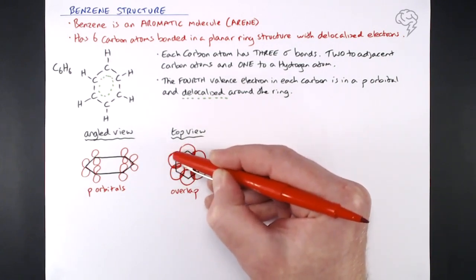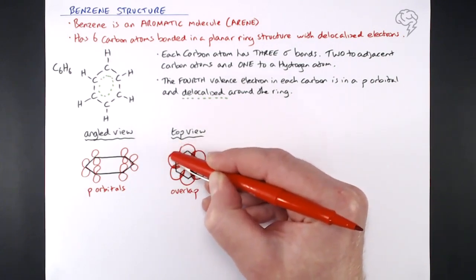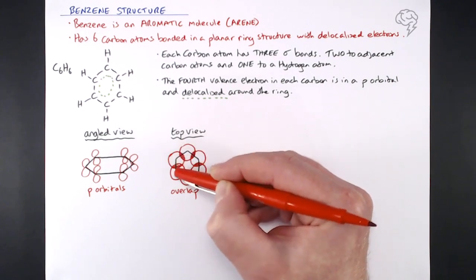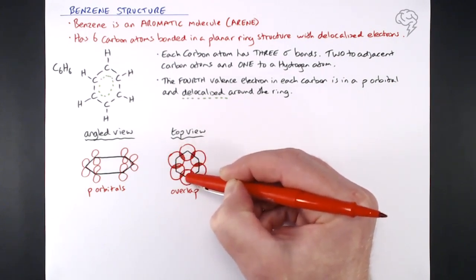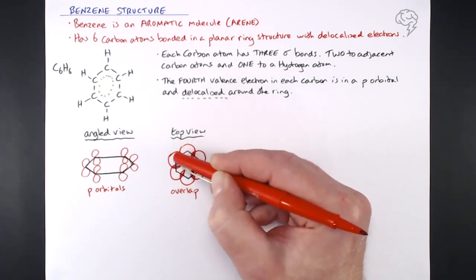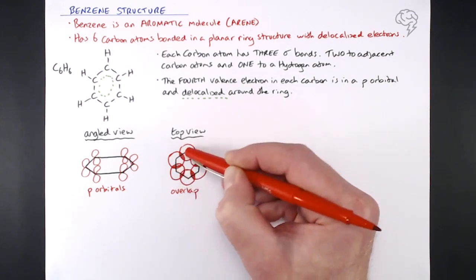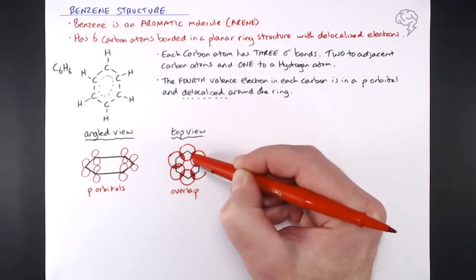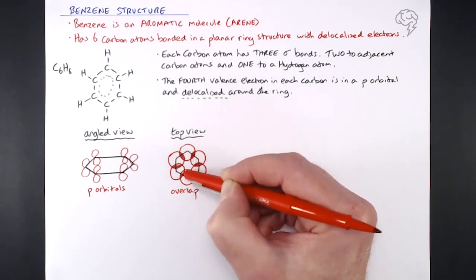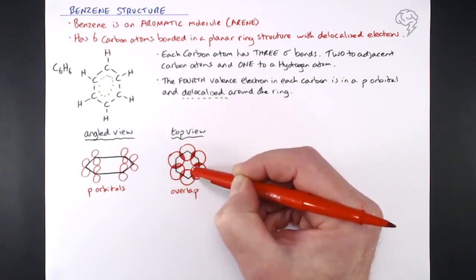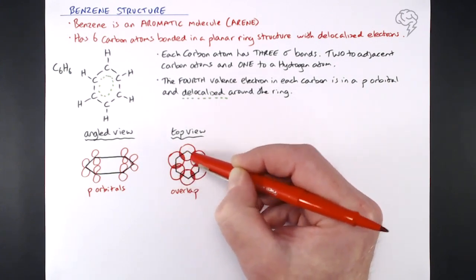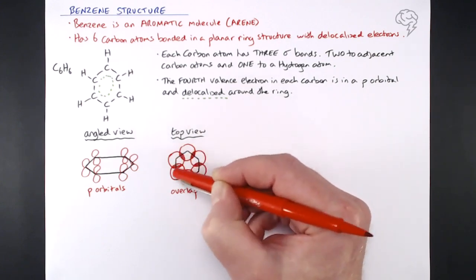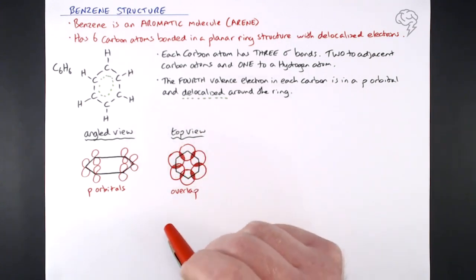Now what this means is the electron in this p orbital at the top here, because it overlaps with this one, you can actually jump from this orbital to this one, which can jump from this one to this one, which can jump from this one to this one. So all six electrons have access to all six p orbitals, and that's why they end up delocalized, they jump from one to the other, moving around in a delocalized pi system we call it, or a pi ring, because we've got six electrons all jumping from one p orbital to another.